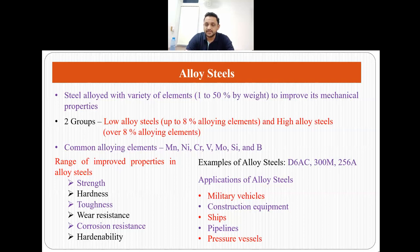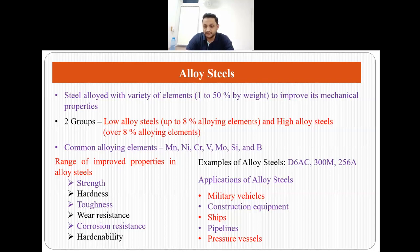These alloying elements improve the properties of alloy steels, giving improvement in strength, hardness, toughness, wear resistance, corrosion resistance and hardenability. Examples of alloy steels are D6AC, 300M and 256A. We can see the applications of alloy steels in military vehicles, construction equipment, ships, pipelines and pressure vessels.